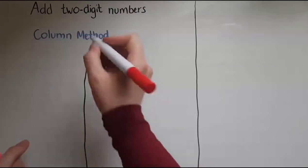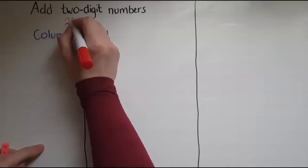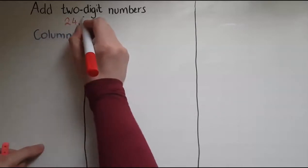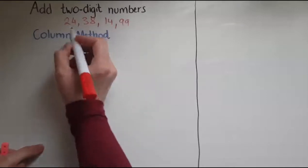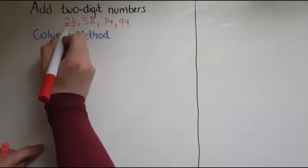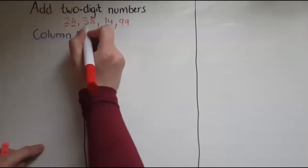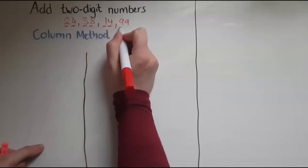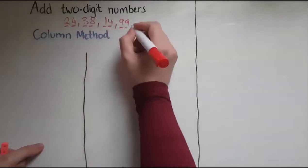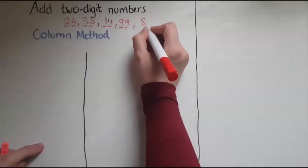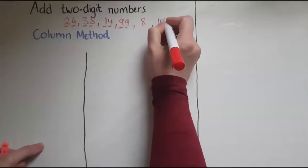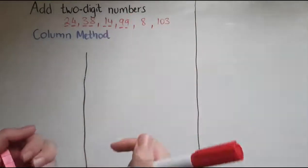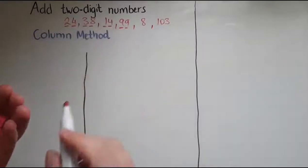Two-digit numbers are numbers like 24, 38, 14, 99 because they have two digits. So 24 has a 2 and 4, two digits. 38 that's 3 and 8, 14 is 1 and 4, 99 is 9 and 9, whereas 8 is a one-digit number because it has just one digit. 103 is a three-digit number, so we'll focus on these ones, the two-digit numbers.